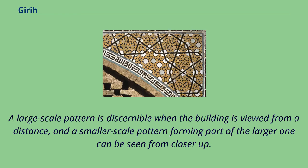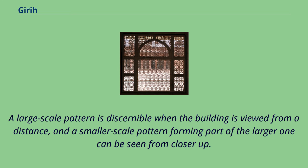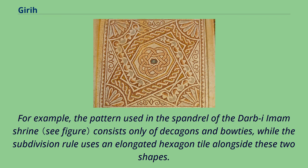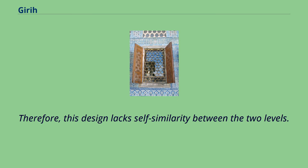A large-scale pattern is discernible when the building is viewed from a distance, and a smaller-scale pattern forming part of the larger one can be seen from closer up. Although there is evidence that some ancient girih tilings used a subdivision rule to draw a two-level pattern, there are no known historic examples that can be repeated an infinite number of times. The pattern used in the spandrel of the Darb-i Imam shrine consists only of decagons and bow ties, while the subdivision rule uses an elongated hexagon tile alongside these two shapes — therefore this design lacks self-similarity between the two levels.